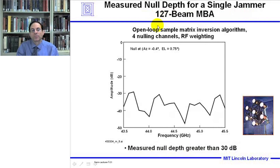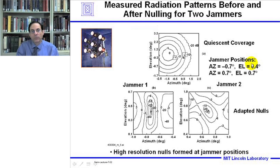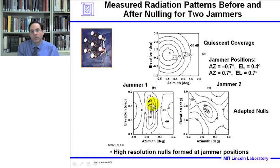The measured null depth for a single jammer using the open-loop sample matrix inversion algorithm with four nulling channels and RF weighting exceeds 30 dB across the frequency range from 43.5 to 45.5 GHz. For two jammers located at azimuth minus 0.7 degrees / elevation 0.4 degrees and azimuth 0.7 degrees / elevation 0.7 degrees, the adapted contours show deep, high-resolution nulls formed in the direction of both jammers.